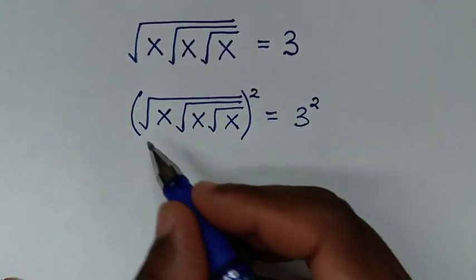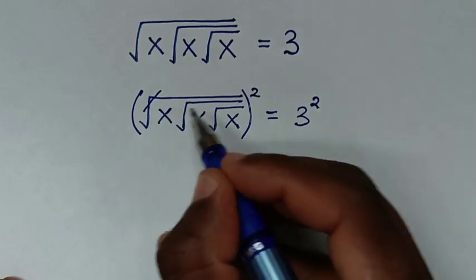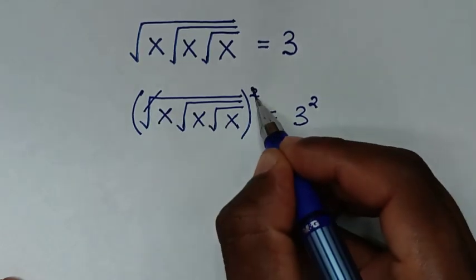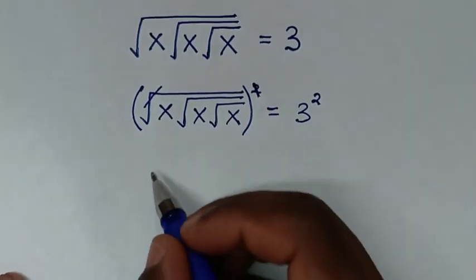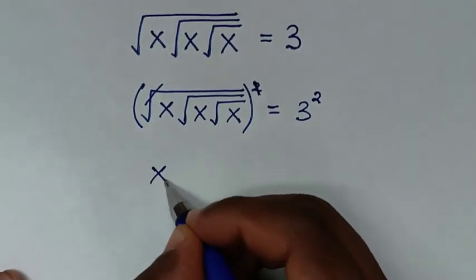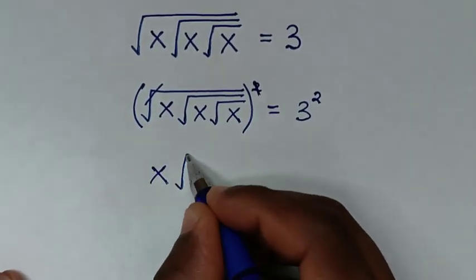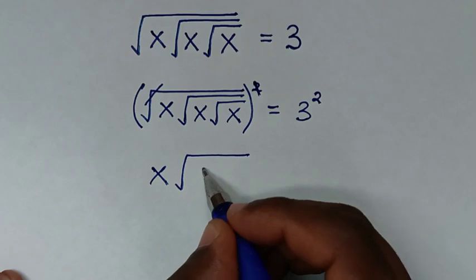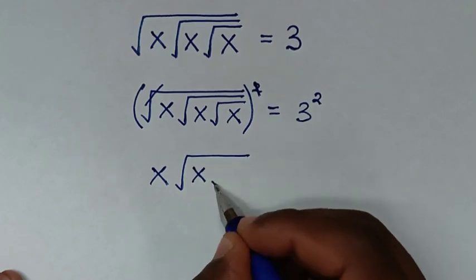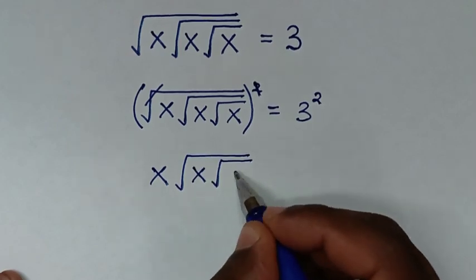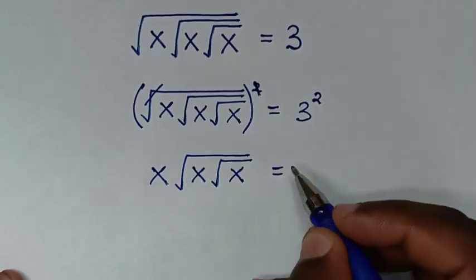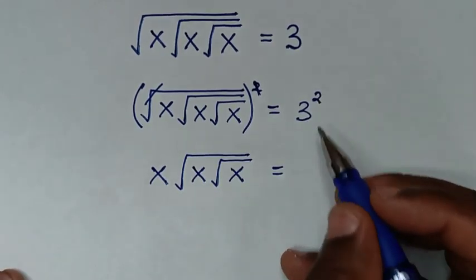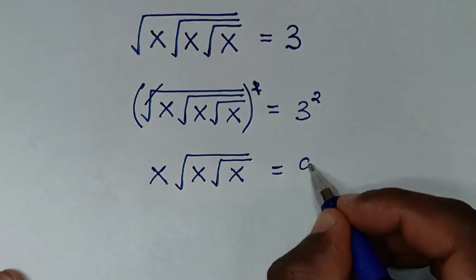This square root will cancel with this square. So it will be x times square root of x under square root of x, equal to 3 squared, which is 9.